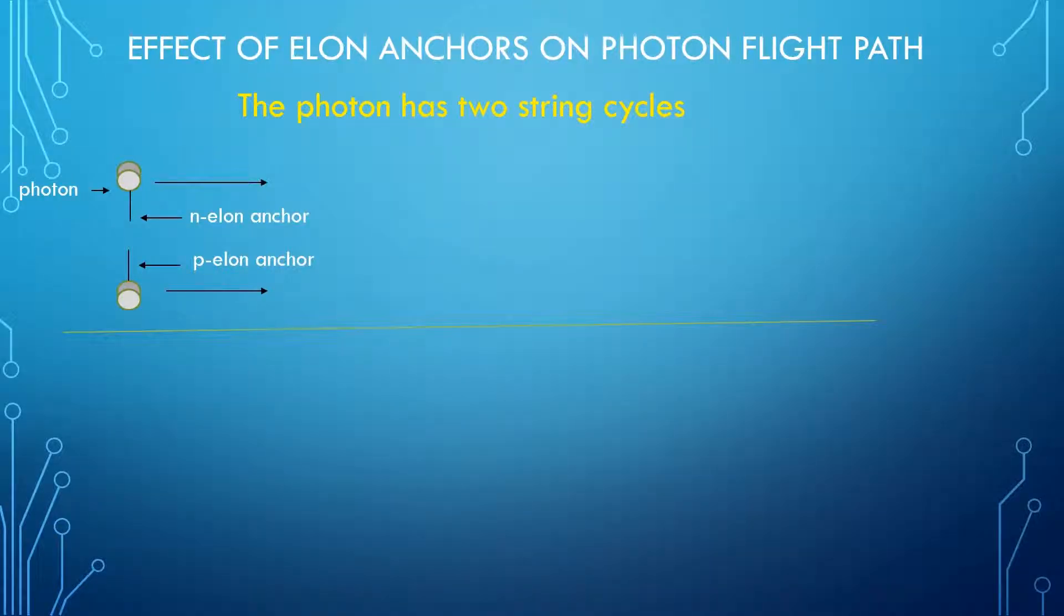The electric fields are created by elons. N elons create the negative electric fields and P elons the positive electric fields. In one cycle the elons are directed down and in the next string cycle they are directed up. If the photon is traveling in a vacuum, the elons cannot act as anchors and the photon travels in a straight line.